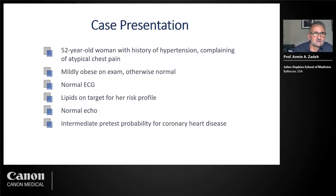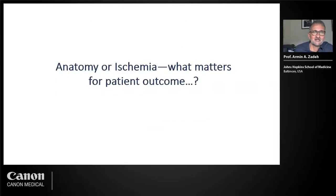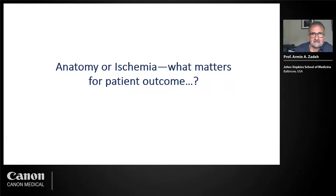Many providers would still order a stress test as the first line of testing, but as Dr. Williams alluded to, the evidence for this becomes less and less solid. Overall, we have to think about how we improve the patient's outcome, and in order to do that, we have to address one of the biggest questions in cardiology for many years: what drives patients' outcomes — is it coronary anatomy, or is it myocardial ischemia? The good news is that there is now a clear-cut answer, and this question is settled. This is data from the ISCHEMIA study, just recently published.